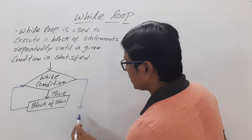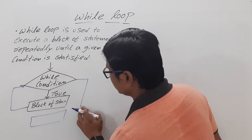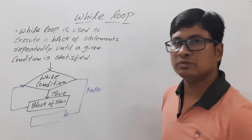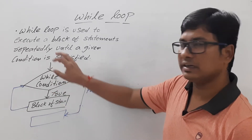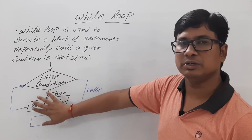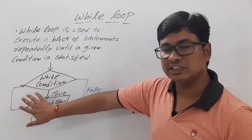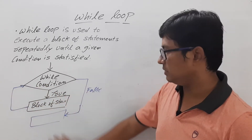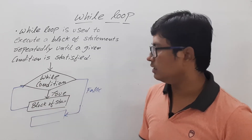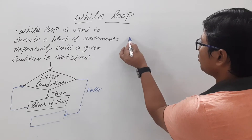After executing the block of statements, you verify whether the condition is true or false. If the condition is false, you will execute the other statements after the loop. So: entry, verify condition — if true, execute the block of statements, then verify again; if still true, execute again; if false, execute the statements which are after the while loop.